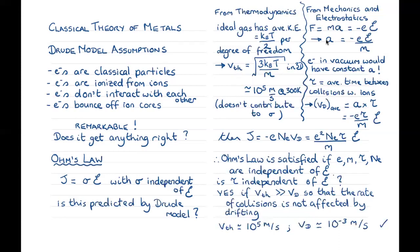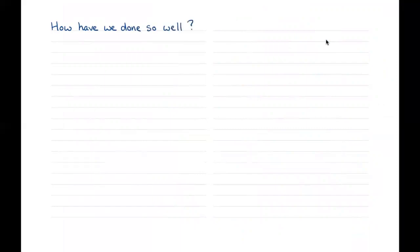The thermal velocity is of order 10^5 meters per second, while typical drift velocities are around 10^-3 meters per second at room temperature — eight orders of magnitude smaller. So we can say that the classical free electron theory — the Drude model — predicts Ohm's law. This is a little bit amazing given the simplicity of the assumptions.